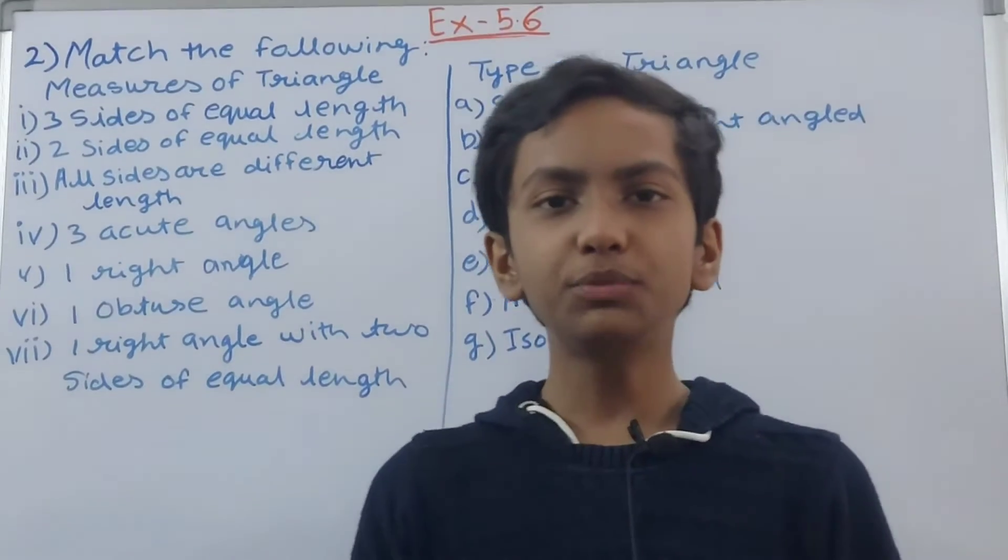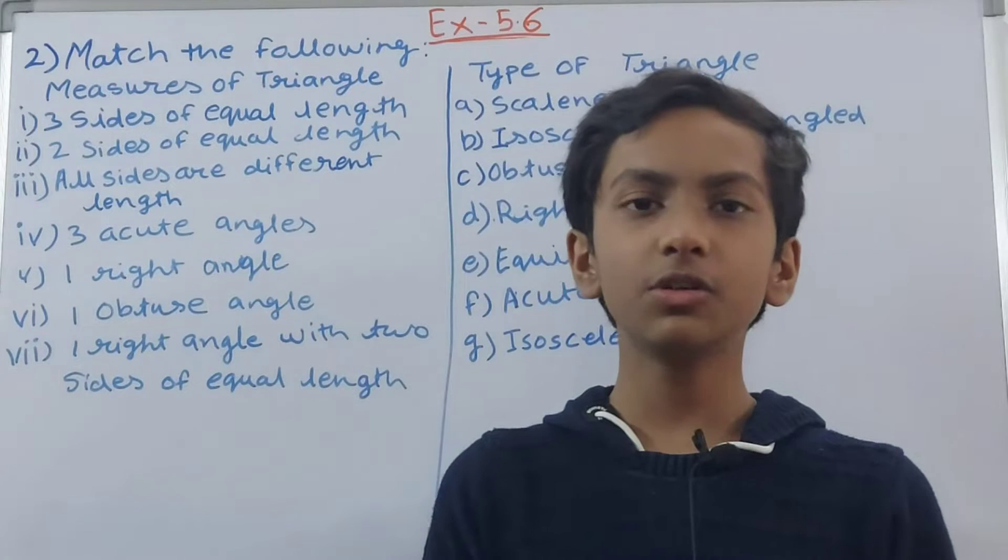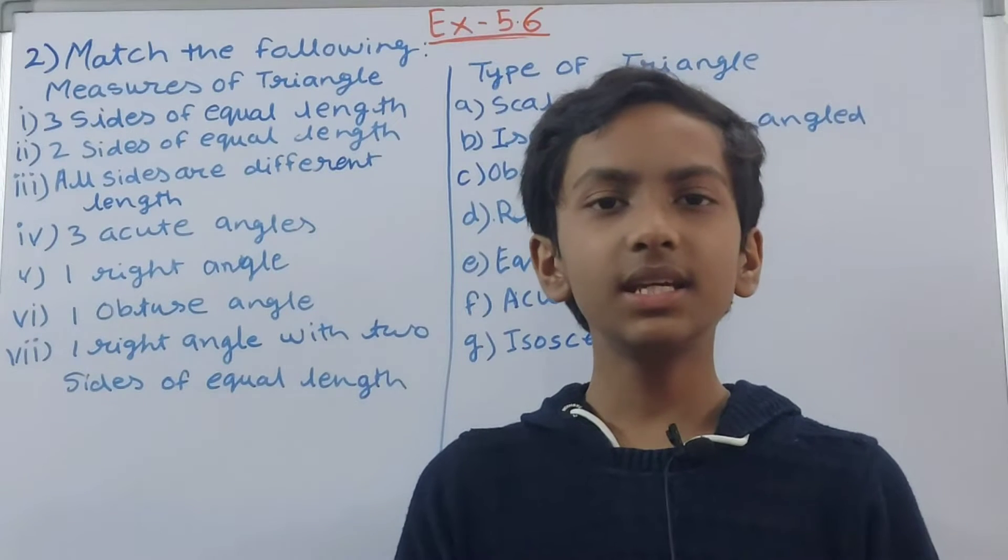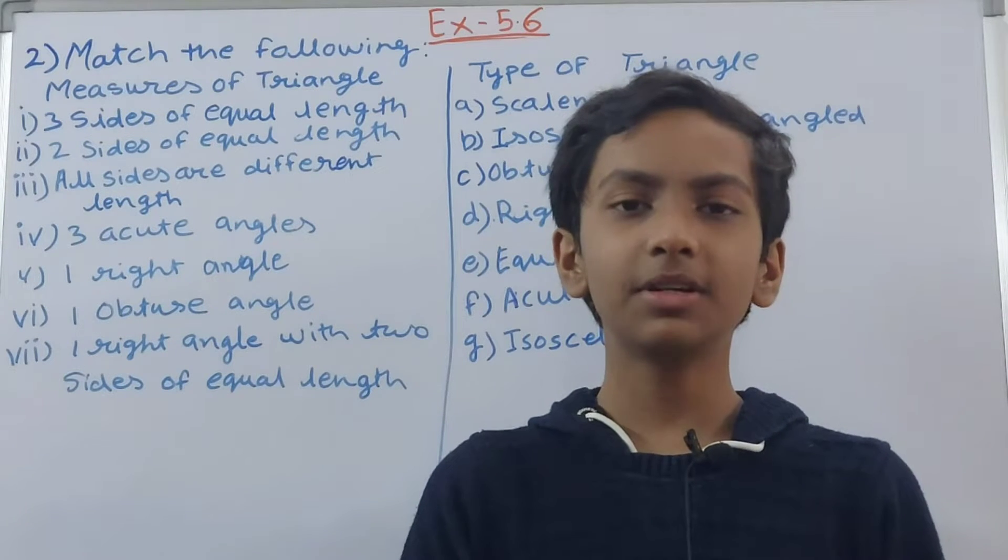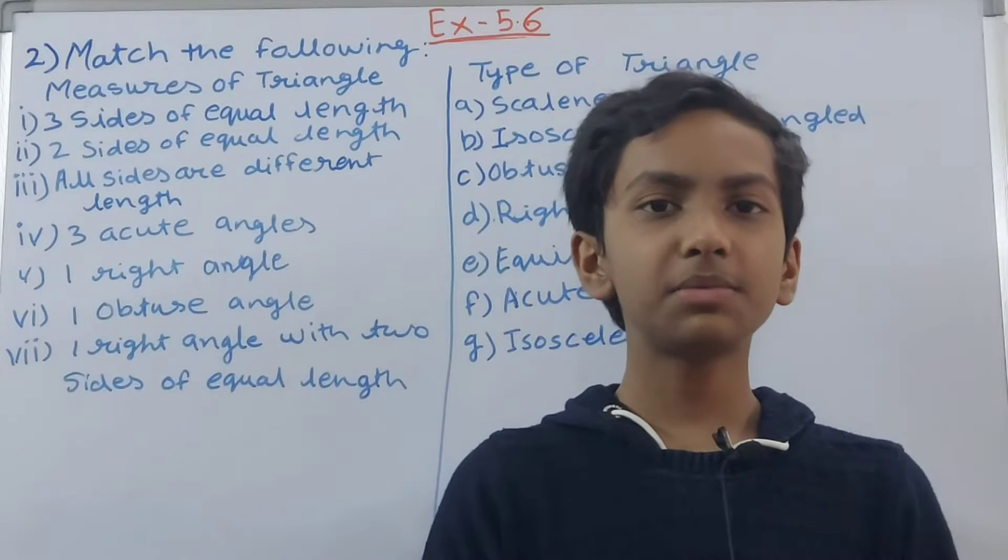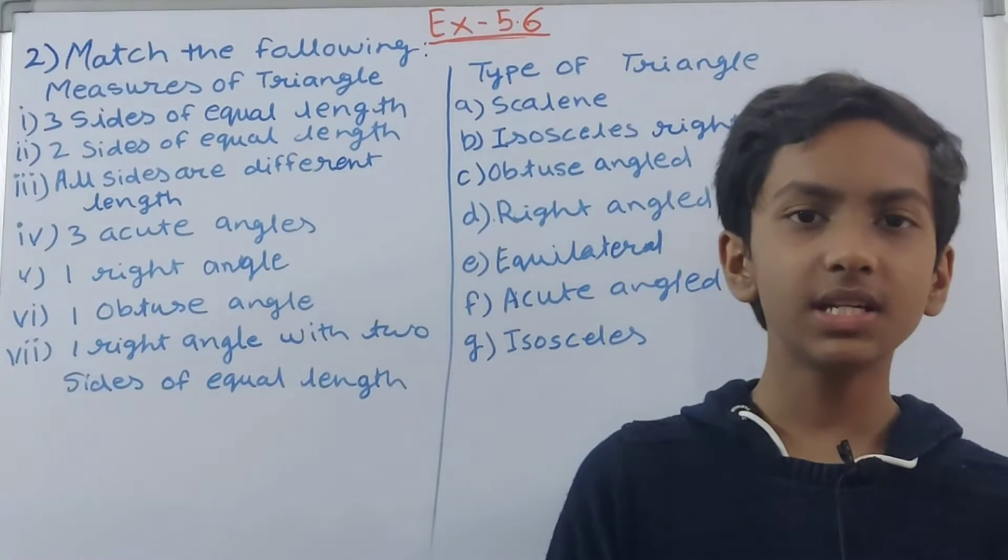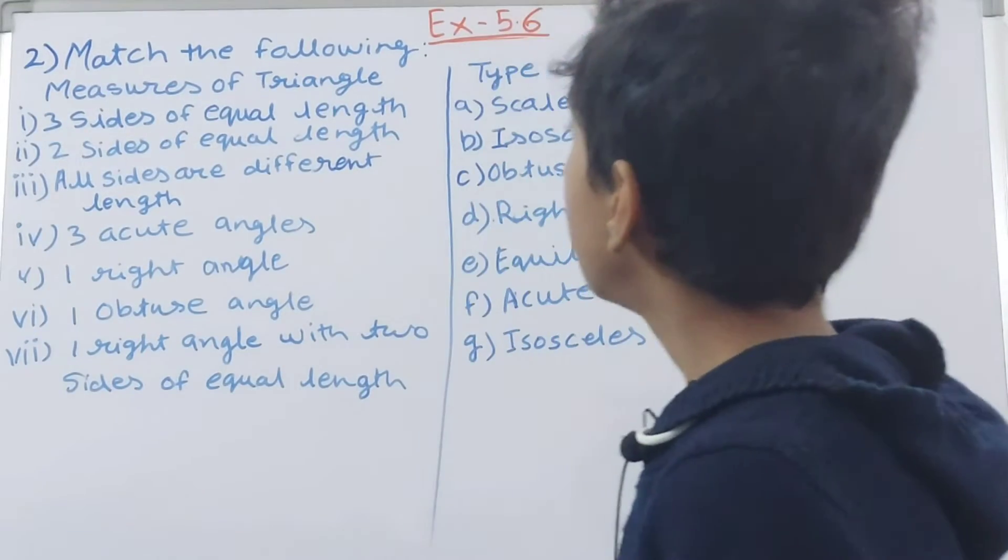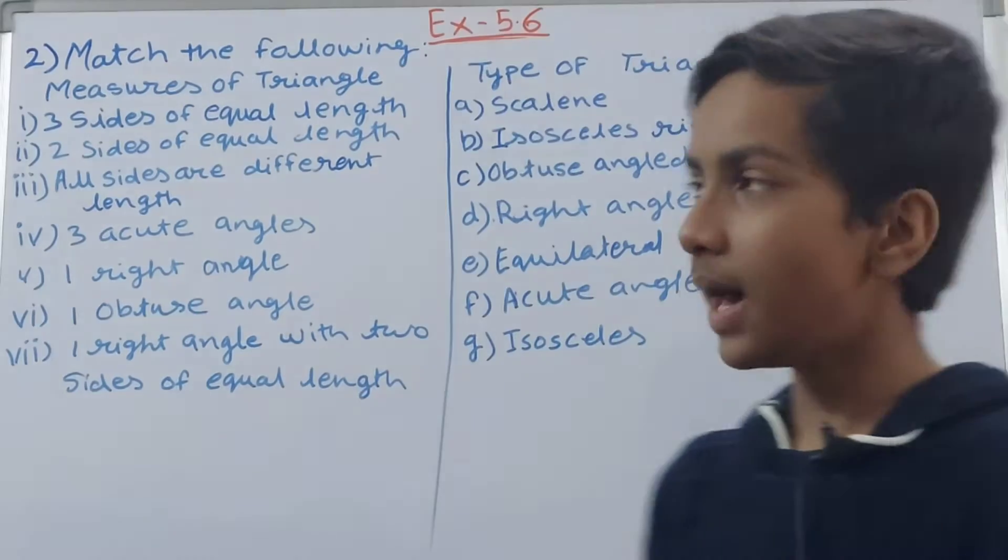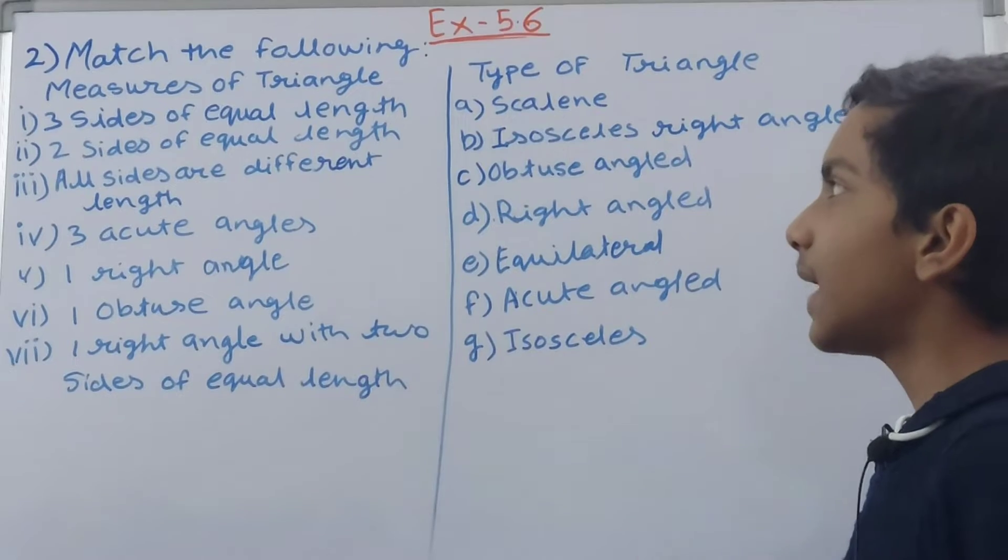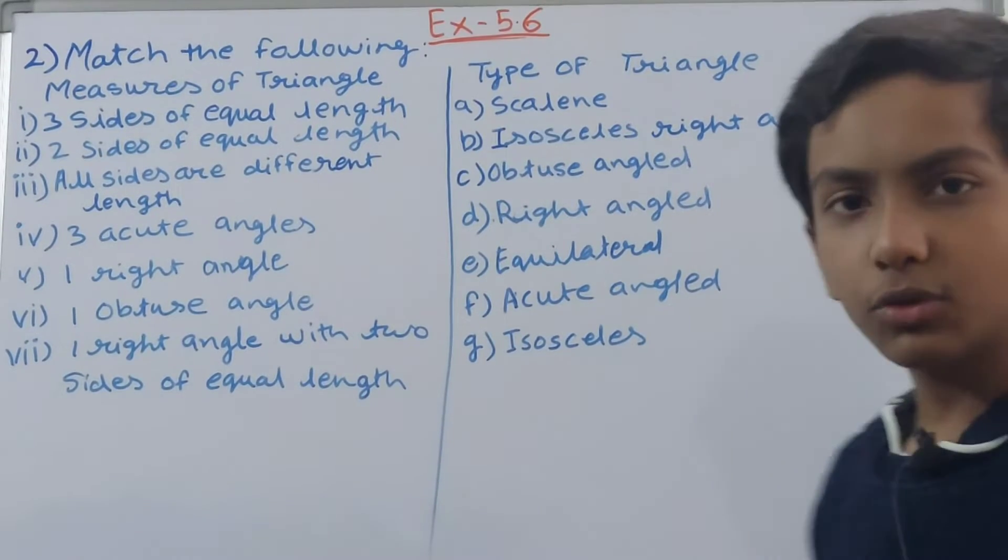Hello friends, welcome back to my YouTube channel Unlock Your Learning. In this video we are going to solve NCERT Maths Class 6 Chapter 5 Understanding Elementary Shapes Exercise 5.6 Question Number 2. So friends, without wasting any time, let's begin. This is a match the following, so we have to match the measures of triangles with the types of triangles.